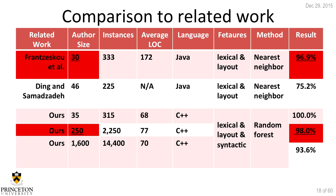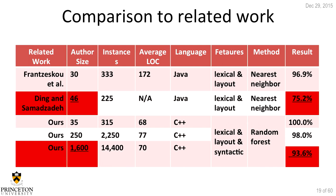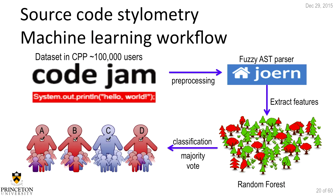In the past, the highest accuracy for de-anonymizing programmers was 97% — for 30 programmers — but we can de-anonymize 250 programmers with 98% accuracy, beating the highest past accuracy with a much more difficult problem. The largest data set used in the past had 46 programmers at 75% accuracy. After last year's talk, we scaled our approach to 1,600 programmers and get 94% accuracy in correctly identifying 14,400 source code samples from those 1,600 programmers. This is large-scale de-anonymization.